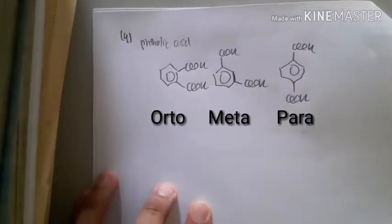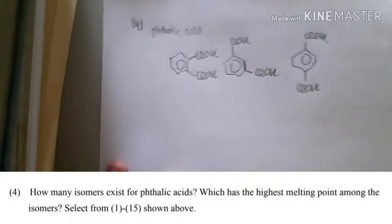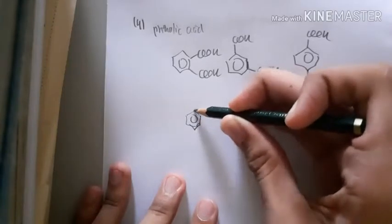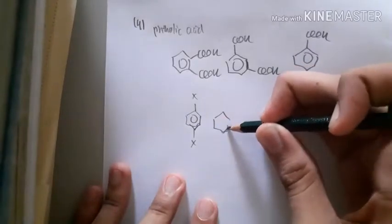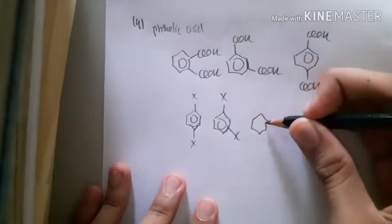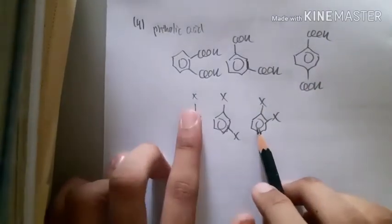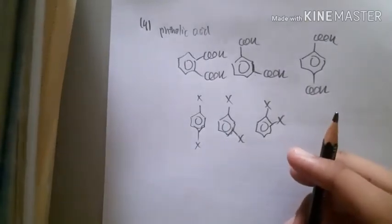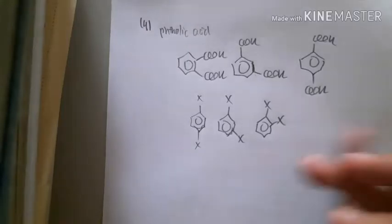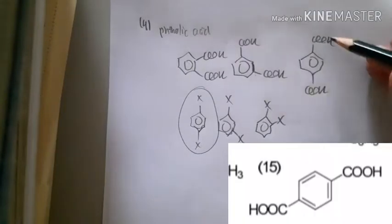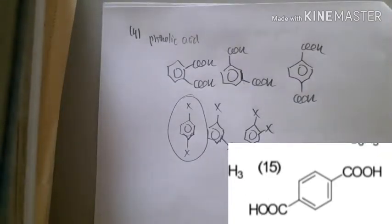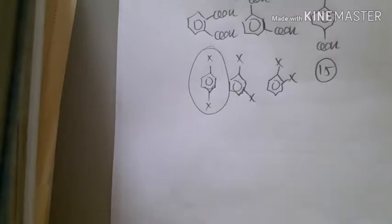The second part of question four asks which isomer has the highest melting point. The trick is to look at the size — one isomer has the substituents here, another has them here, another in a different position. Assuming X is COOH, they have the same formula but different positions. The widest area covered corresponds to the highest melting point. The widest is the para isomer, so the answer is para-COOH COOH phthalic acid, and the selected answer is 15.